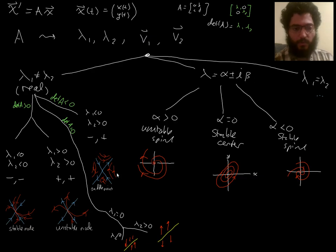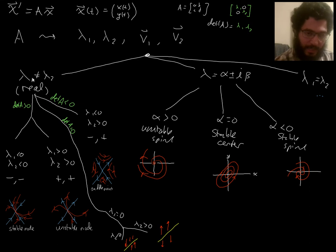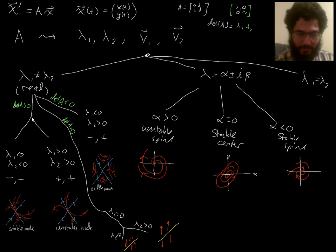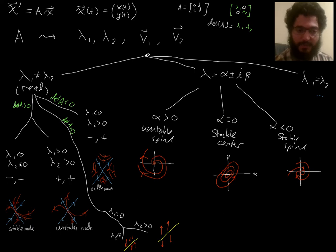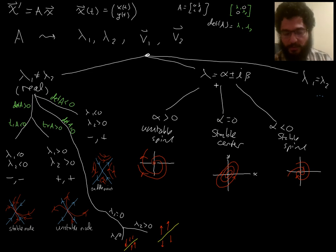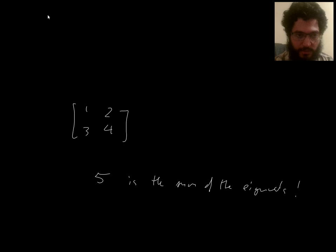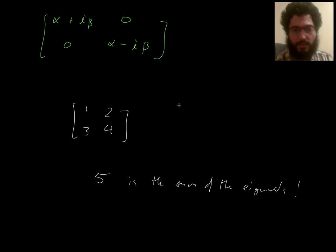So how does the trace help us? Say you know you have real distinct eigenvalues and the determinant is positive — so you're wondering whether both eigenvalues are positive or both are negative. Check the trace: it's the sum of eigenvalues. If both eigenvalues are negative, their sum is negative. If both are positive, their sum is positive. So the negative-trace branch corresponds to the stable node and the positive-trace branch to the unstable node.